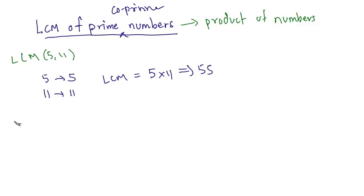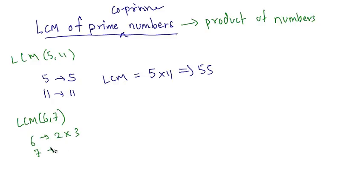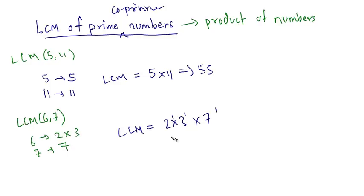To prove this again, let's take a set of co-prime numbers. Let's take the LCM of 6 and 7, which are co-prime numbers. The prime factors of 6 are 2 and 3, and the prime factor of 7, which is a prime number, is 7. The LCM would be equal to the product of prime factors — 2 × 3 × 7 with highest powers. Simplifying this, we get 6 × 7, which are the numbers themselves.